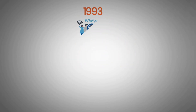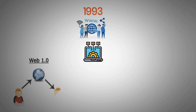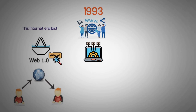Since 1993, when the World Wide Web first went online, technological advances have been made to improve the internet and provide a better user experience. Web 1.0 was notable for introducing technology such as the shopping cart and the ability to create static web pages. This internet era lasted from 1989 to 2005.